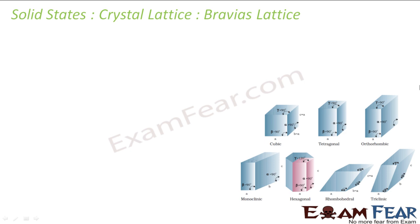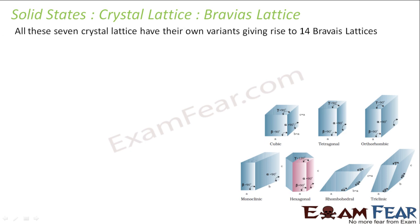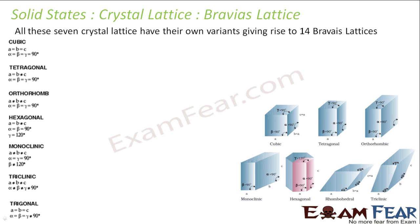He observed using all his experiments that in 1850 there are 14 different possible combinations of 3D lattices for a given crystal. There are seven: cubic, tetragonal, orthorhombic, hexagonal, monoclinic, triclinic, and trigonal.